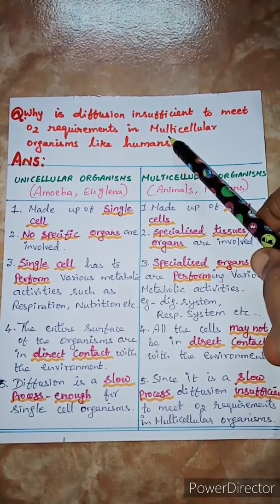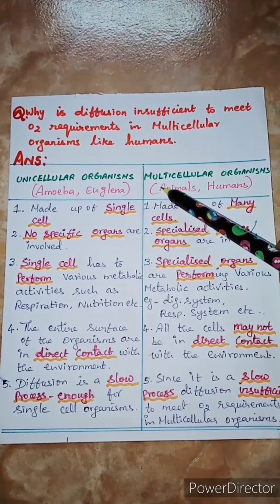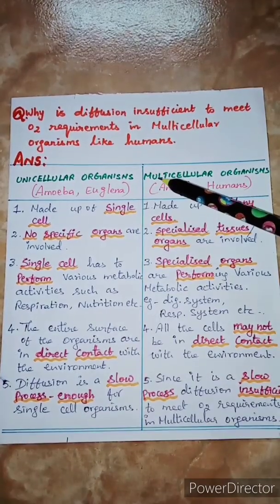Before going to this question, you should note the difference between unicellular and multicellular organisms. You have studied in your lower classes, uni means single, multi means many.